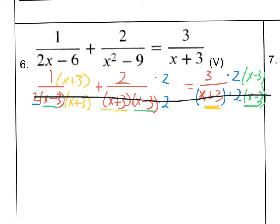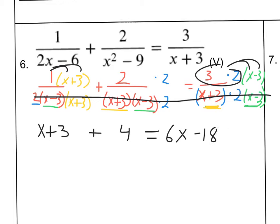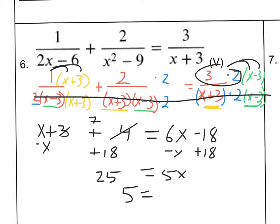That would leave me with 1 times X plus 3, which is X plus 3, plus 2 times 2, which is 4. And here we've got 3 times 2 which is 6 — distributed that gives us 6X minus 18. I'm going to add 18 to the other side. Adding 18, we get 25 on the left. Subtracting X from both sides, we get 5X equals 25, so X equals 5. The excluded values are X cannot be 3 and X cannot be negative 3. Since 5 is neither of those, we are okay.